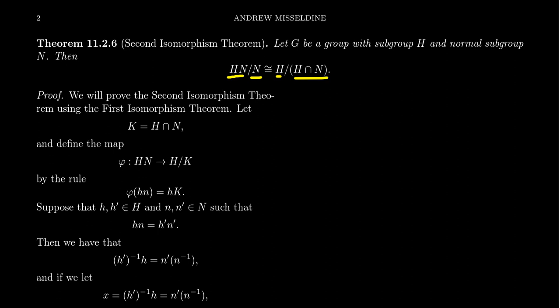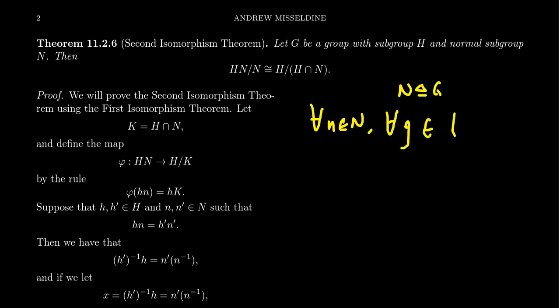Before we dive into the proof, let's make sure this statement even makes sense. Note that by assumption N is a normal subgroup of G, which means N contains all of the G-conjugates of elements of N — N is closed under conjugation. In particular, N contains all of the H-conjugates of elements of N. Because N is normal in G, for all n in N and all g in G, we have gng⁻¹ inside of N.